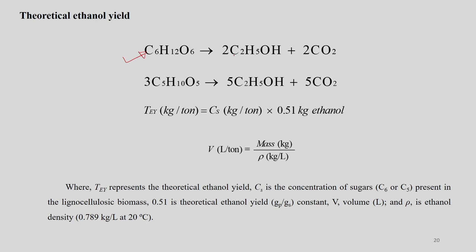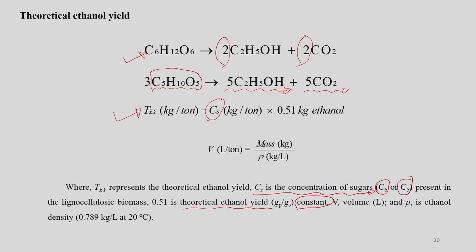The theoretical ethanol yield can be calculated from reaction stoichiometry. For C6 sugars, 1 mole yields 2 moles of ethanol and 2 moles of CO2. For C5 sugars (pentose sugar, C5H10O5), 3 moles yield 5 moles of ethanol and 5 moles of CO2. The theoretical ethanol yield formula uses Cs — the concentration of sugars (C6 or C5) in the lignocellulosic biomass — multiplied by 0.51, the theoretical ethanol yield constant, giving the yield in kg per ton of biomass.